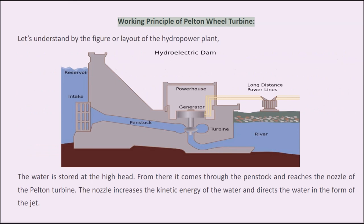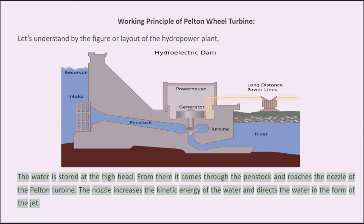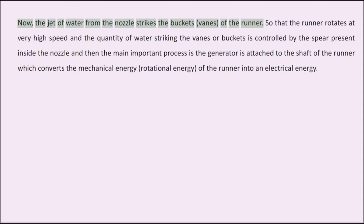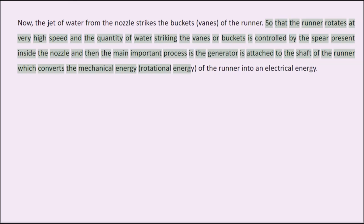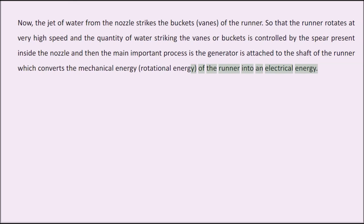Working principle of the Pelton wheel turbine: the water is stored at a high head. From there it comes through the penstock and reaches the nozzle of the Pelton turbine. The nozzle increases the kinetic energy of the water and directs the water in the form of a jet. The jet of water from the nozzle strikes the buckets or vanes of the runner, so that the runner rotates at very high speed. The quantity of water striking the vanes or buckets is controlled by the spear present inside the nozzle. The generator is attached to the shaft of the runner, which converts the mechanical energy — the rotational energy of the runner — into electrical energy.